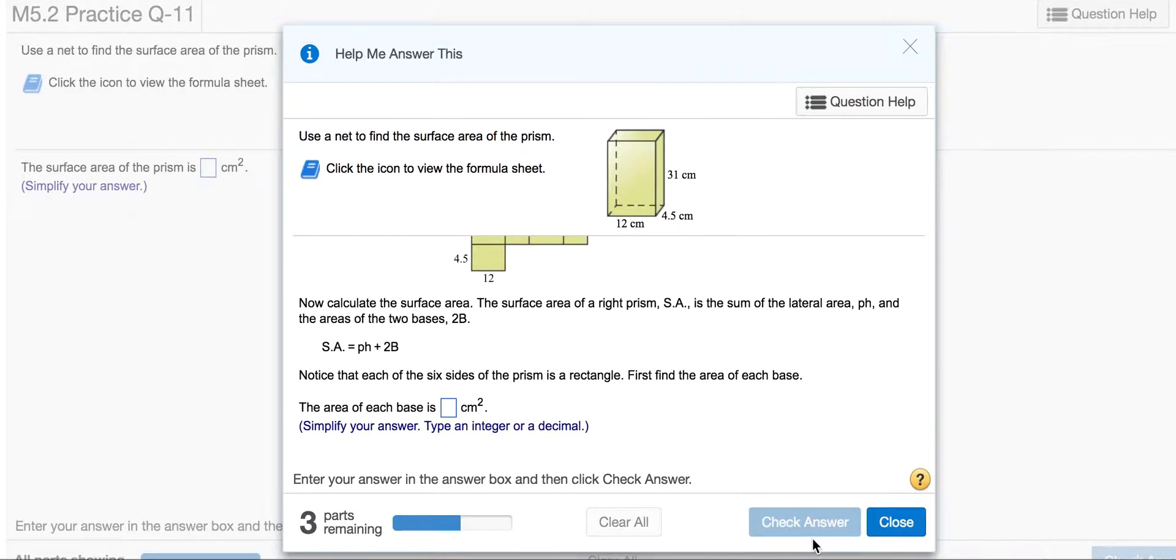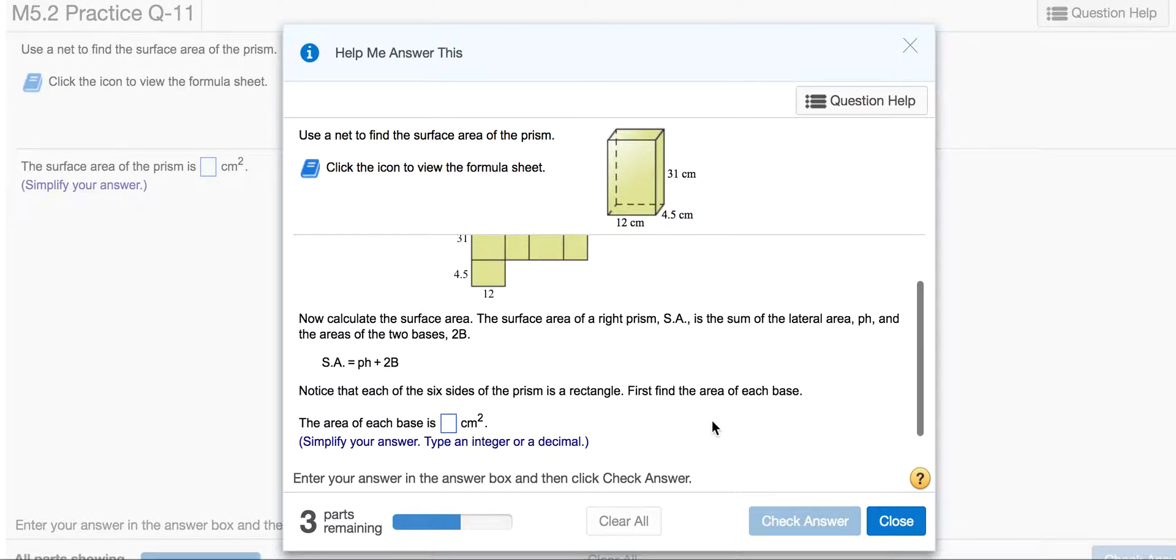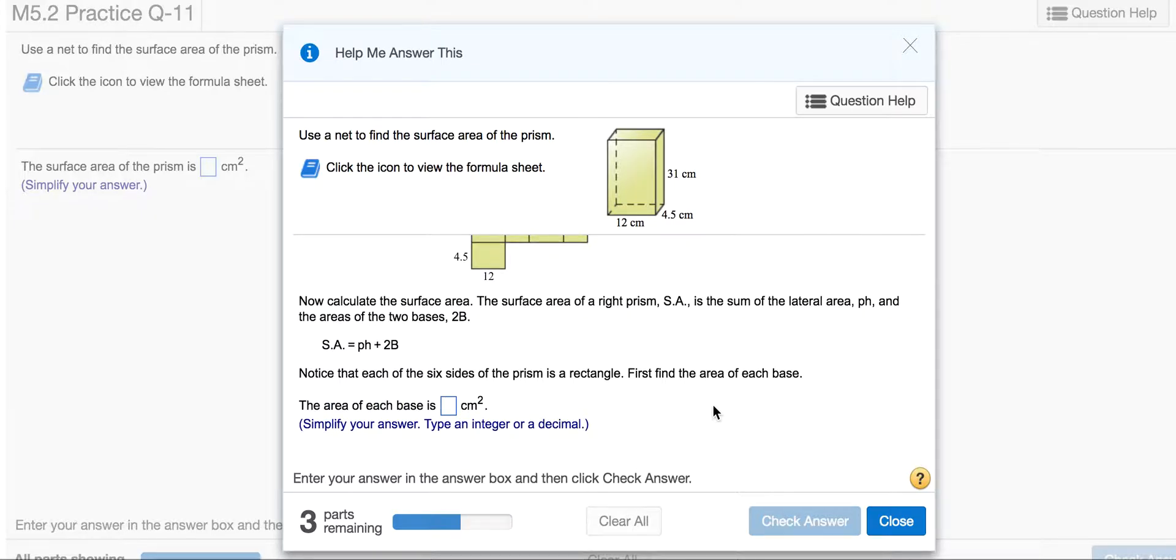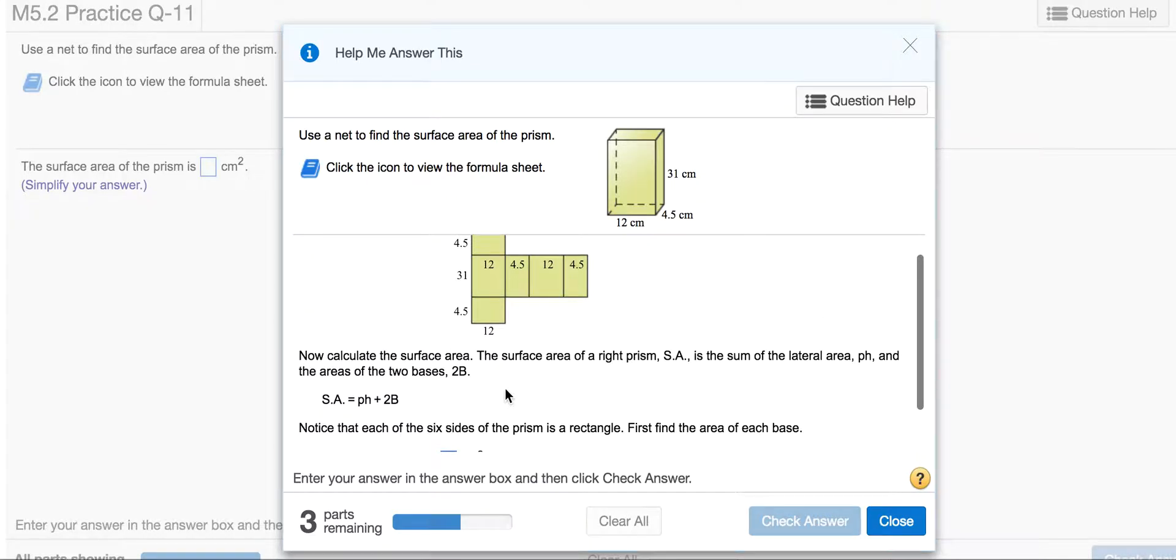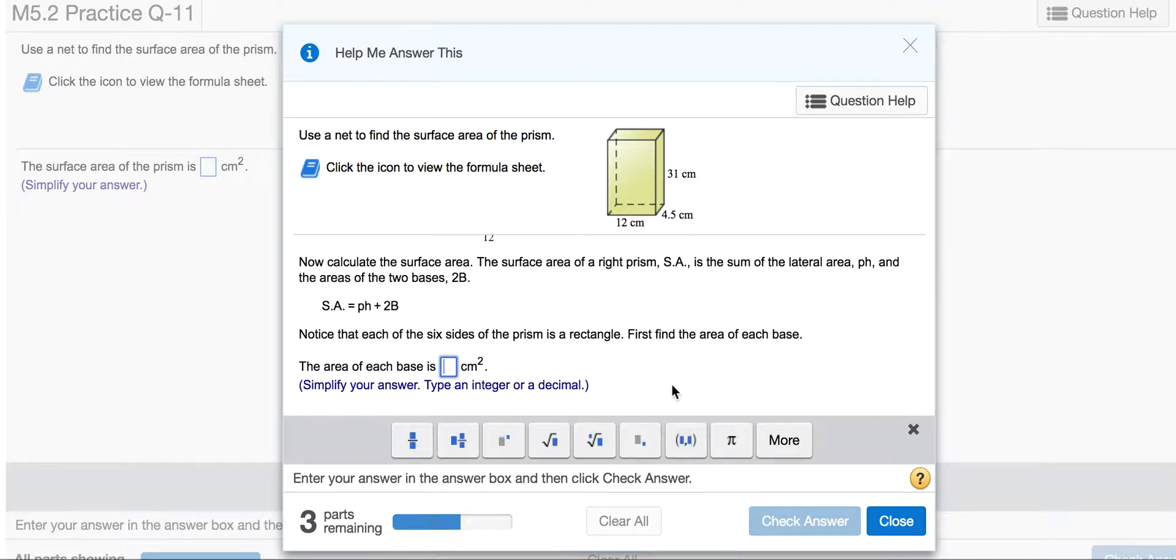They've folded the prism out, and you can see some measurements along the way. We're finding the surface area, which is the sum of the lateral area (pH) and the area of the two bases (2B). So surface area equals pH plus 2B.